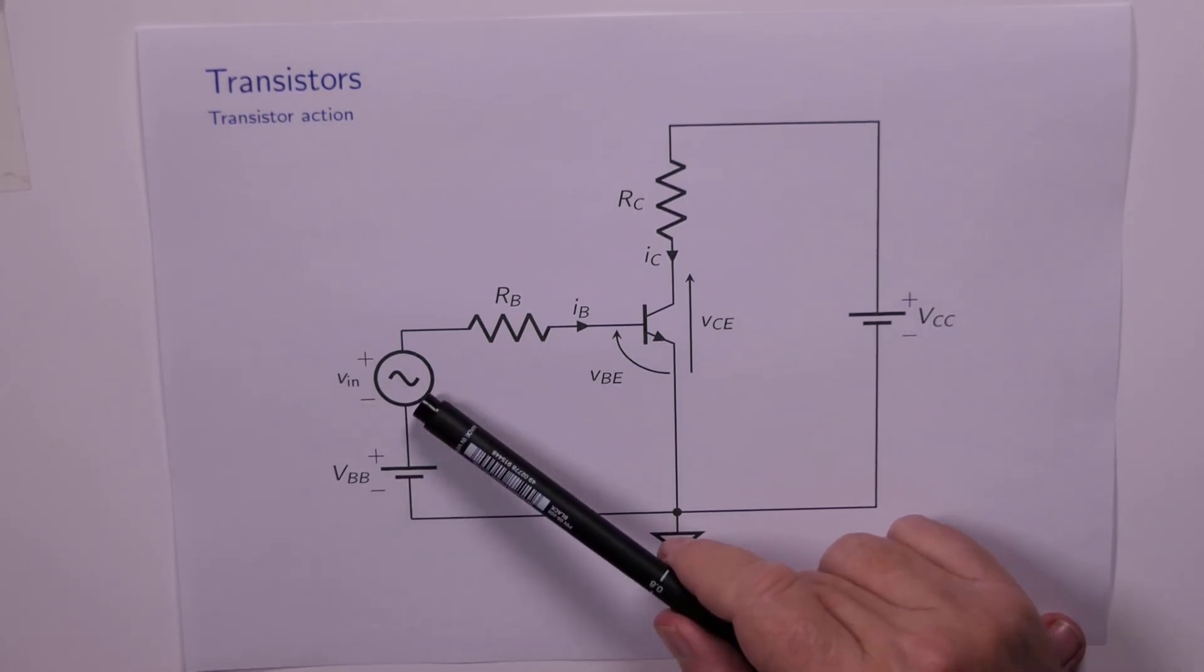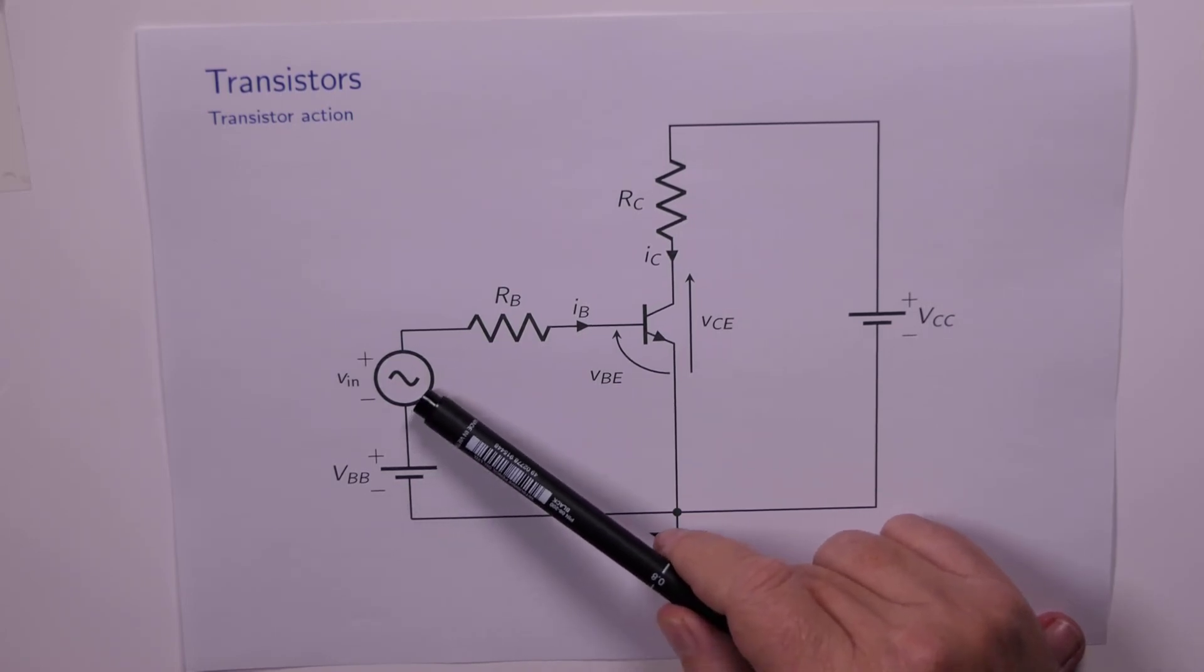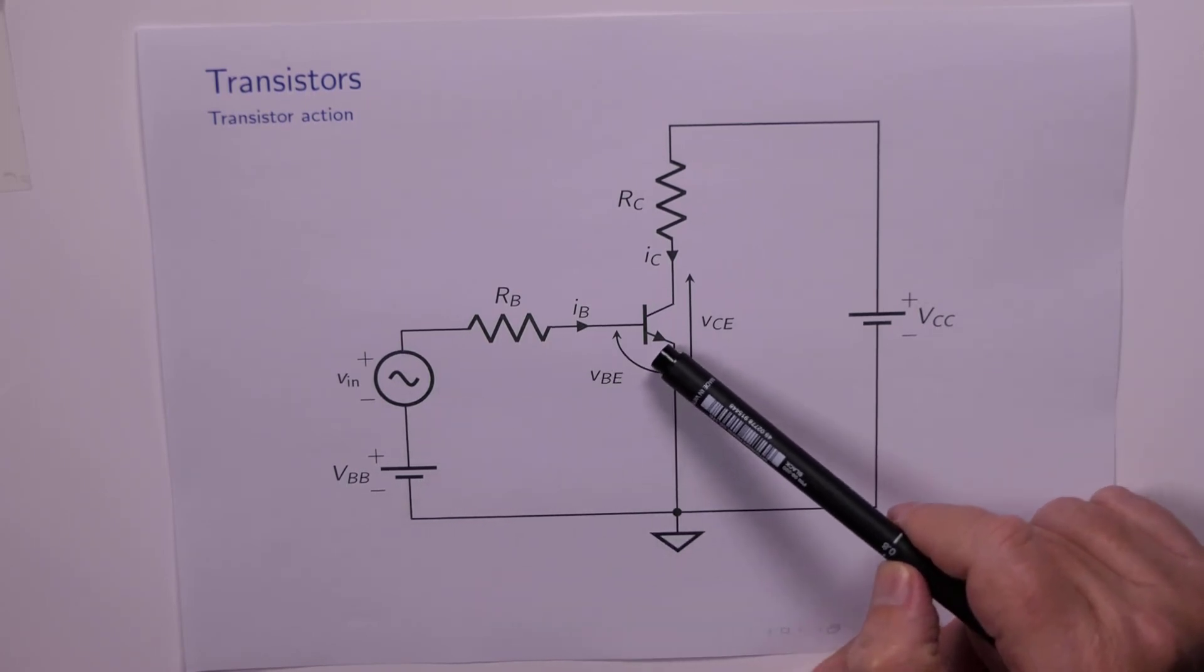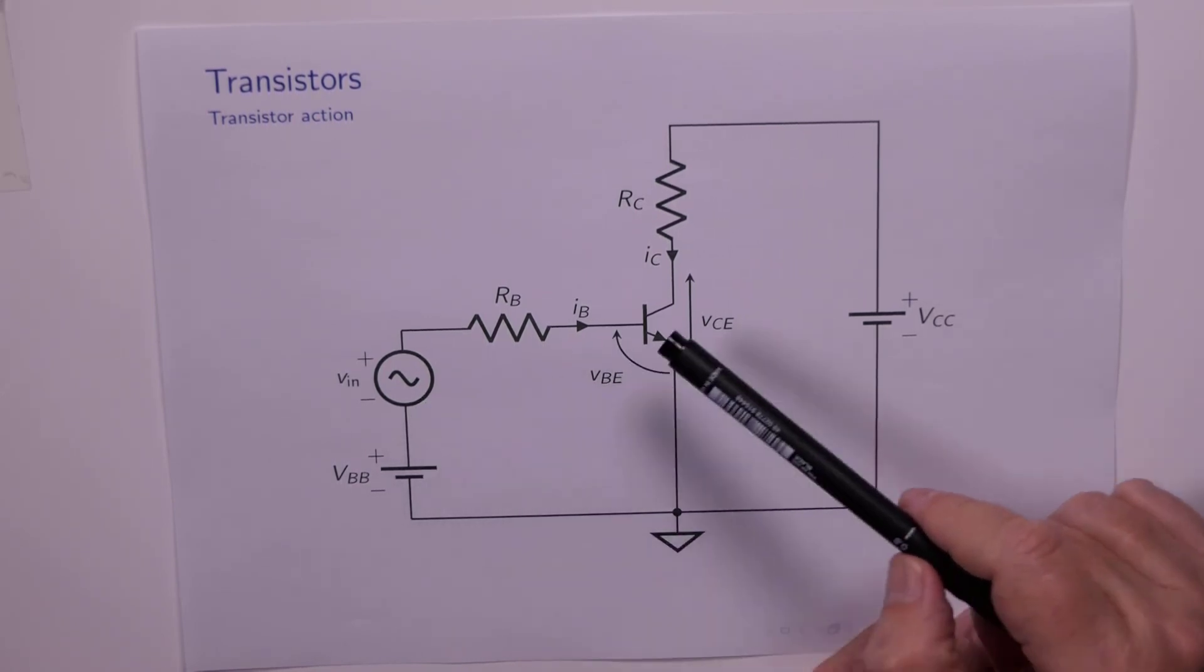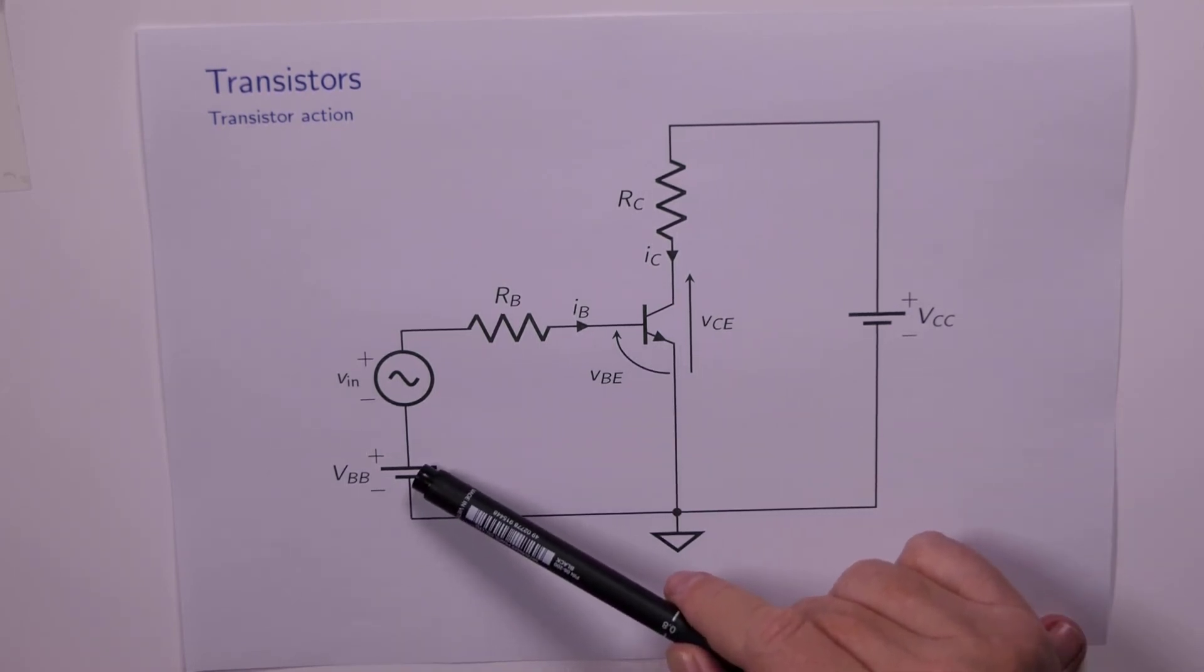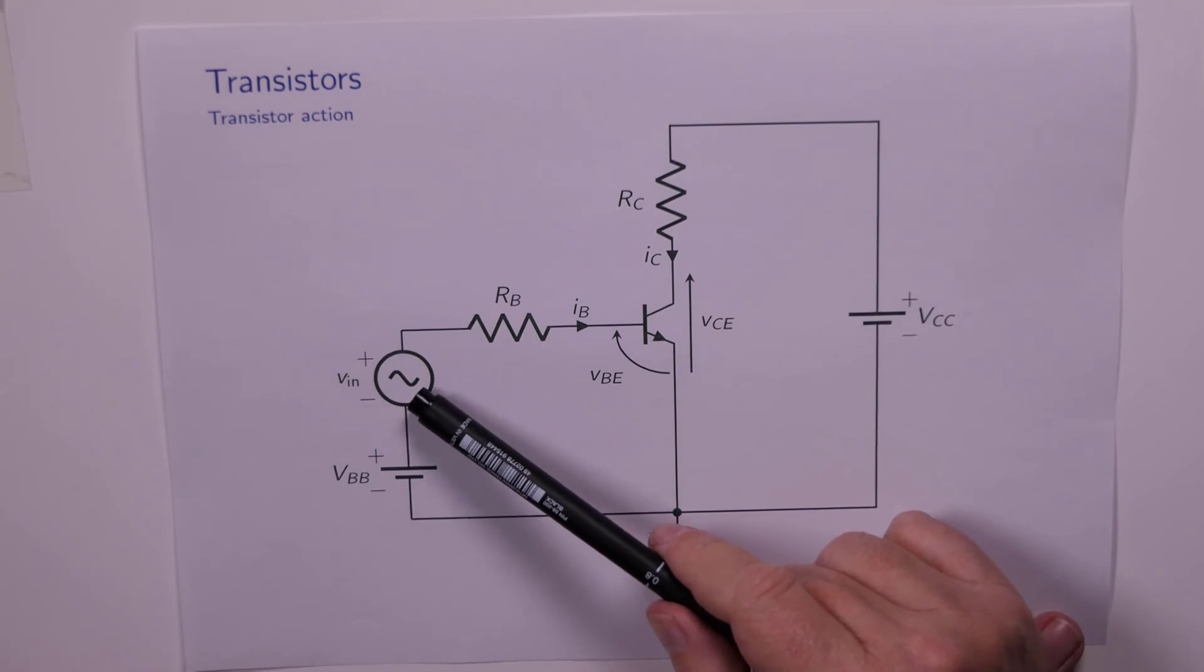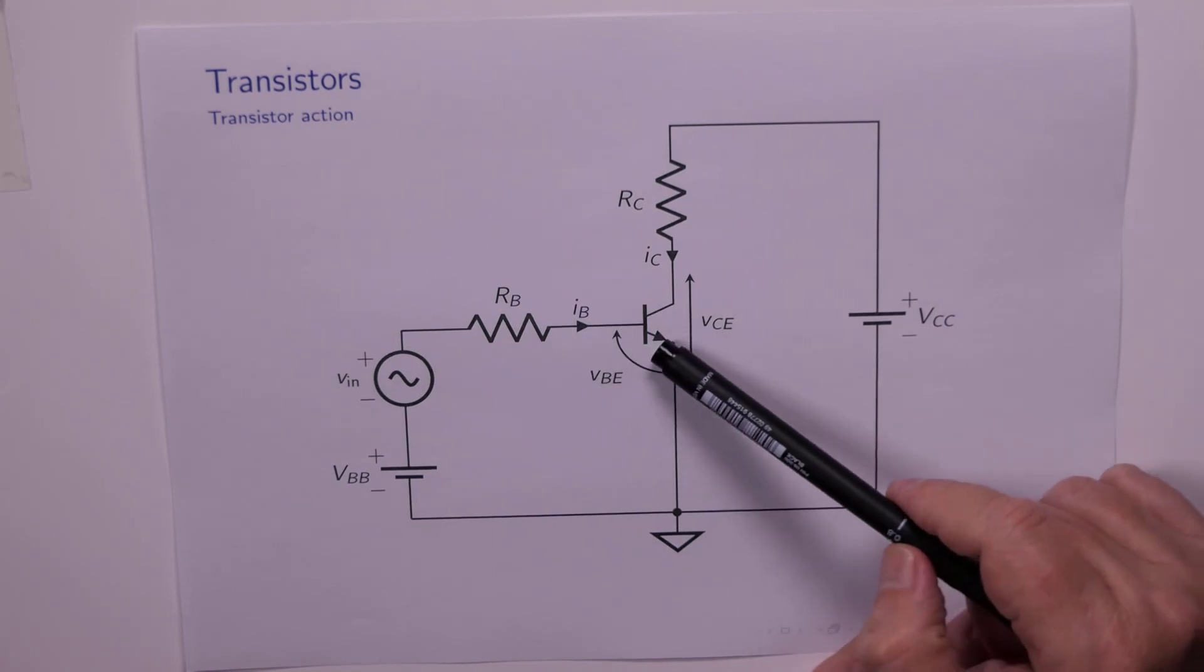The idea is that this voltage source here is what we call a small signal voltage source. It might only go between say plus or minus 100 millivolts. If we didn't have VBB here, that plus or minus 100 millivolts simply wouldn't be enough to turn on the base emitter junction. We need 0.7 of a volt there, and the transistor would in fact stay off. So we need this voltage source here upon which this AC signal rides, and it's VBB which keeps the device turned on.